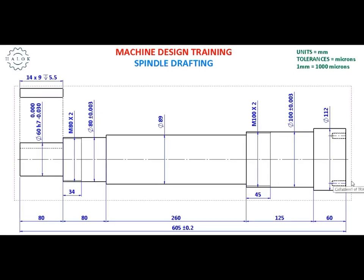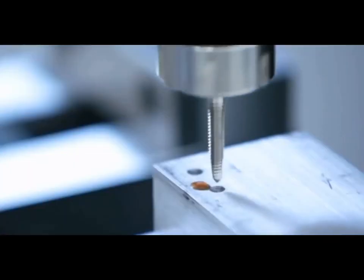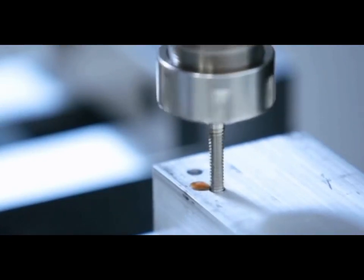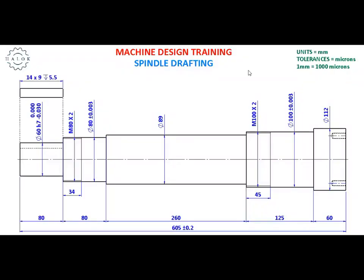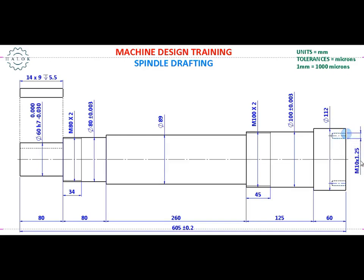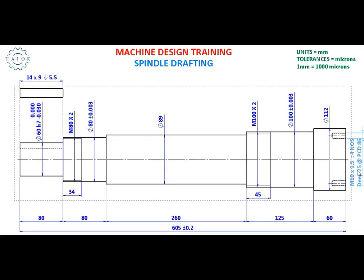Now we are going to dimension the tapped drills. You can see how a typical tapped drill is formed in the industry. These tapped drills are also based on standards and we cannot give our own dimensions — they are based on drill and tap sizes available in industry. Based on the standards I am generating the dimensional value: M10 is the size designation of the drill and 1.5 is the pitch of the tap. I am locating four tapped drills at a PCD of 86 mm, with a depth of 25 mm. This is how we typically dimension a tapped drill.